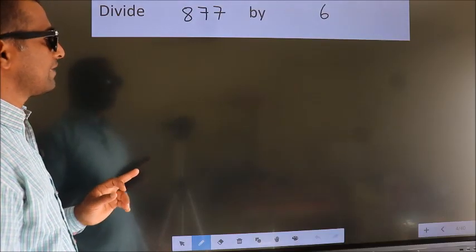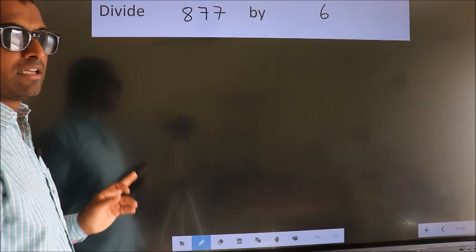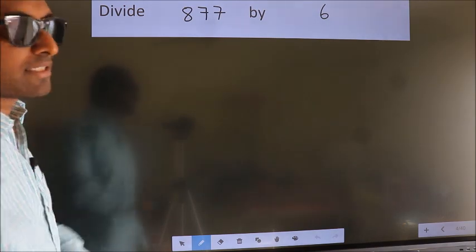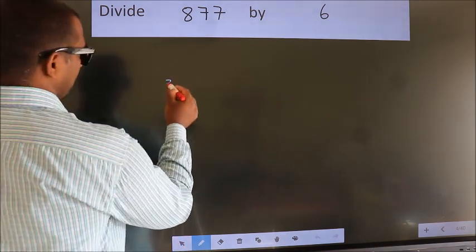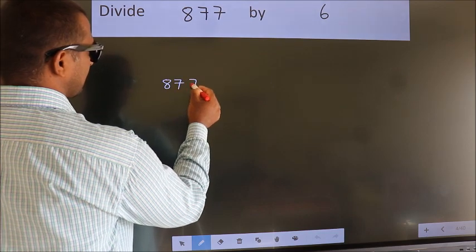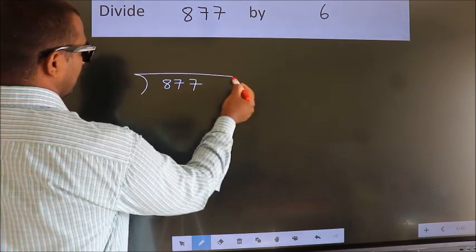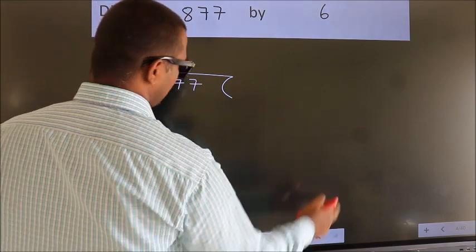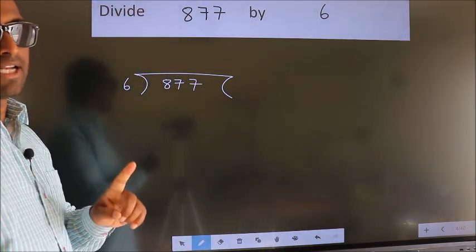Divide 877 by 6. To do this division, we should frame it in this way: 877 here, 6 here. This is your step 1.